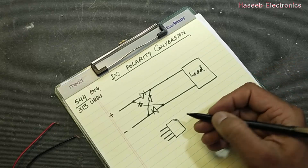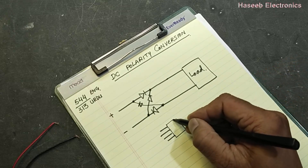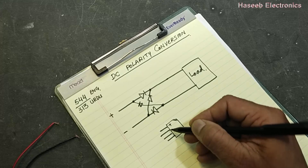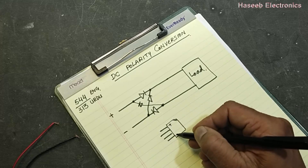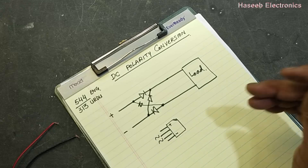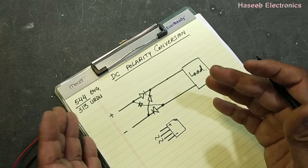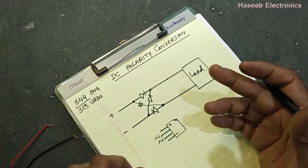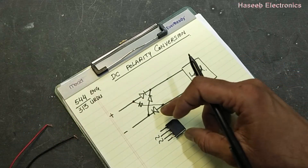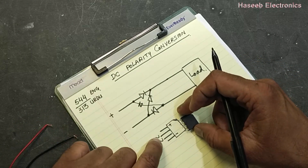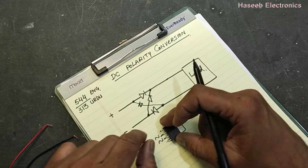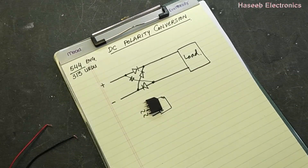This is a bridge rectifier. The cut side is the positive pin and the pin opposite to the cut side is the negative pin. The other two lines are the AC input lines. Basically it is a rectifier and we can use this — apply the voltage to the center pins and take the load at the output side.